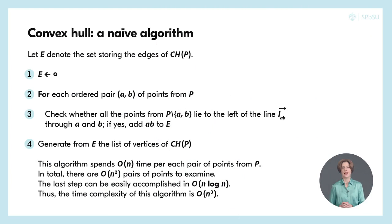The algorithm spends linear time per each pair of points. The total number of pairs of points is quadratic. The last step can be easily accomplished in n logarithm n time. Having summarized all that, we conclude that the time complexity of our algorithm is cubic in the number of points in the set P.